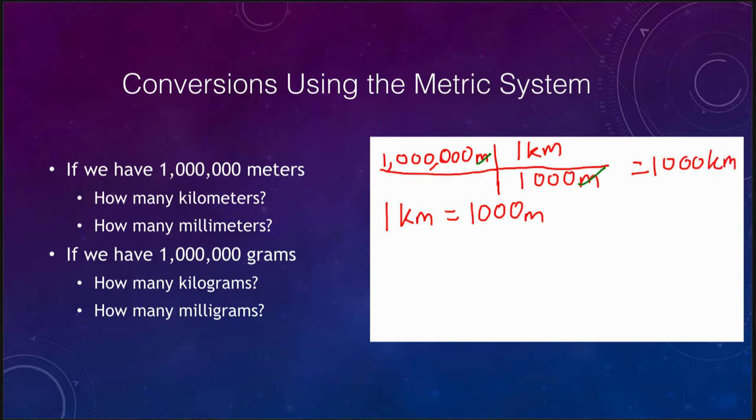That 1 million meters equals 1000 kilometers. So we've just done the division here and just use the conversion that one kilometer equals 1000 meters.